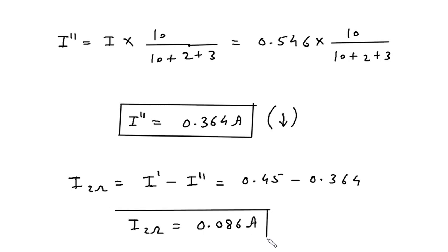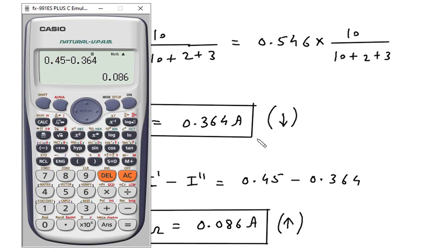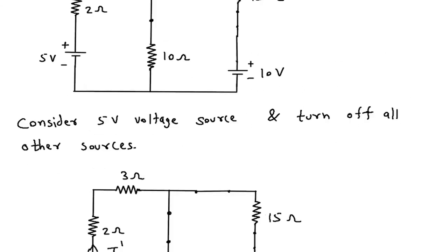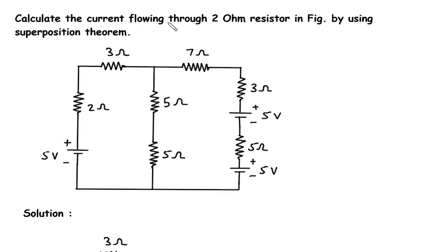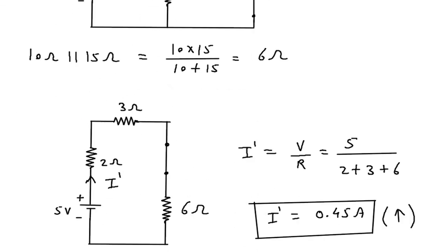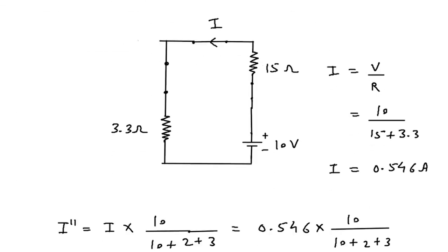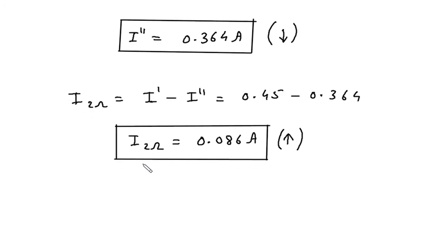The direction will be that of I prime, which is upward. So the answer for this question — calculate the current flowing through the 2 ohm resistor using superposition theorem — is I_2Ω equals 0.086 ampere in the upward direction. This is the final answer.